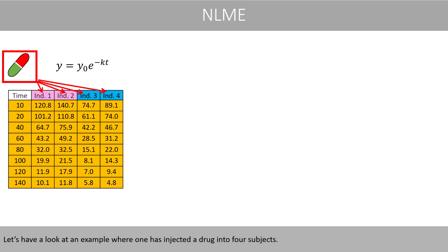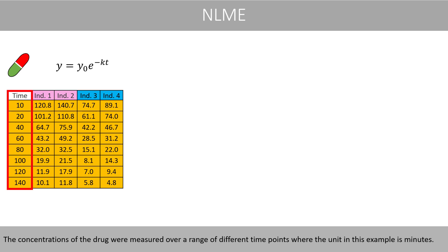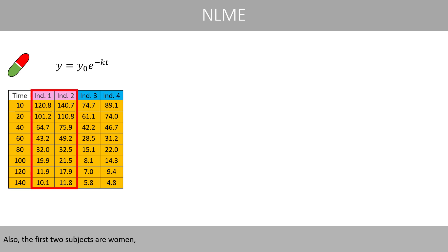Let's have a look at an example where one has injected a drug into four subjects. After 10 minutes, a blood sample was taken where the concentration of the drug was determined. For example, the first person had a drug concentration of about 121 mg per liter in the blood after 10 minutes. The concentrations of the drug were measured over a range of different time points, where the unit in this example is minutes. Also, the first two subjects are women, where subject number 3 and 4 are men.